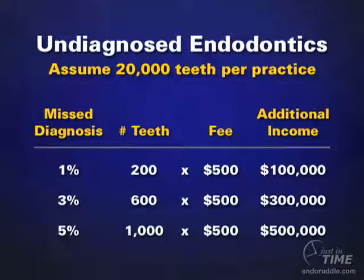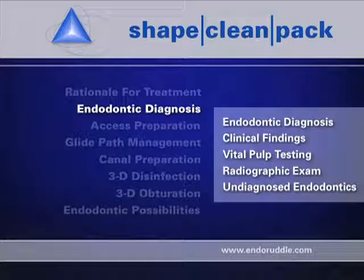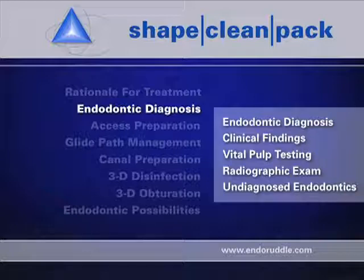Can you imagine going to a neurosurgeon and having them tap on your head, take a little film, and say you're clean — but they haven't done the most important critical part of the examination that can differentially diagnose something serious versus something quite normal? I want you to be a better clinical diagnostic person. Recognize this problem and it's already half solved. You're already doing your clinical findings and radiographic exam — where you can really get better is with your vital pulp testing. Do that, and you're going to uncover the pot of gold within the teeth that visit you daily.